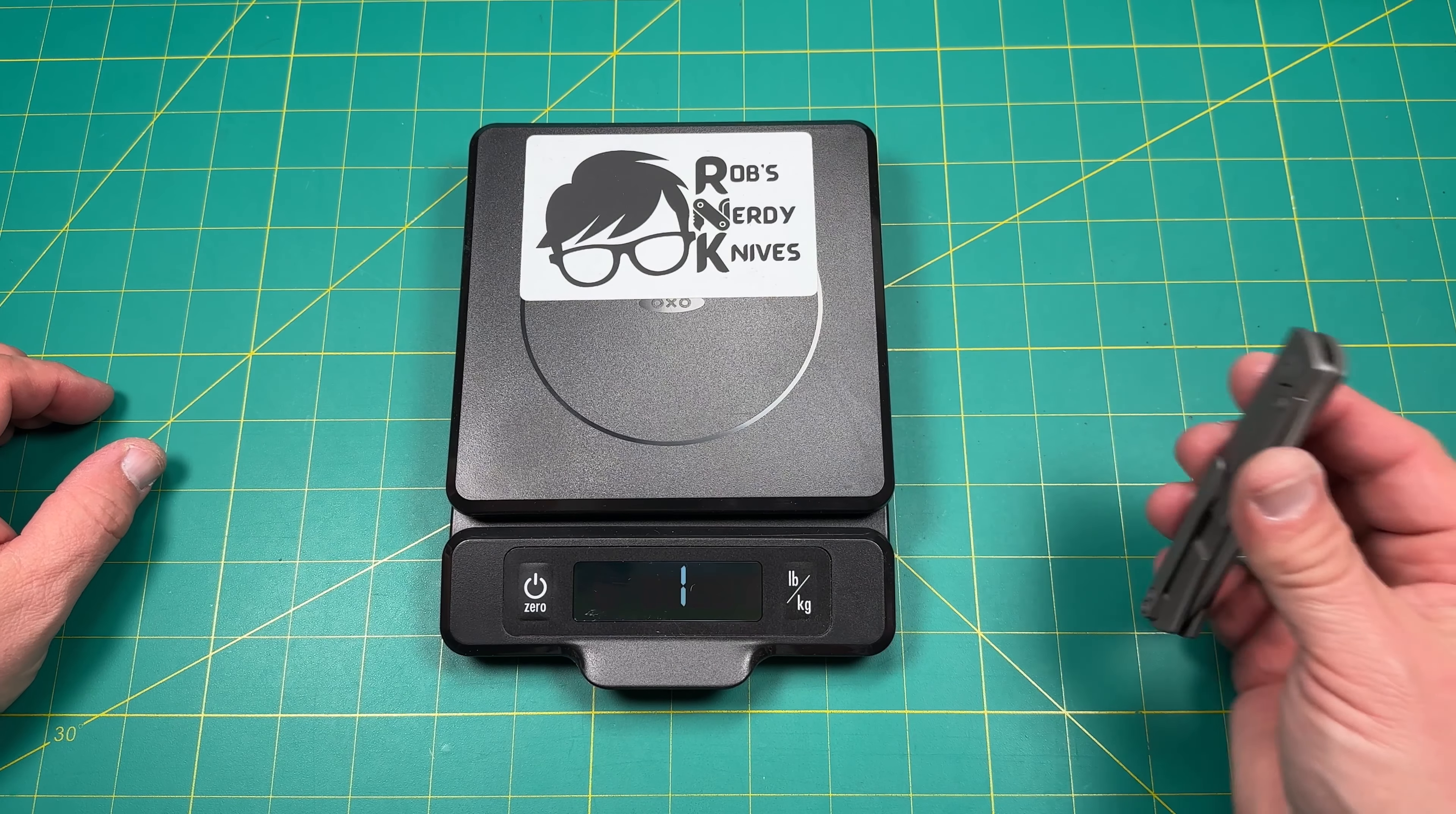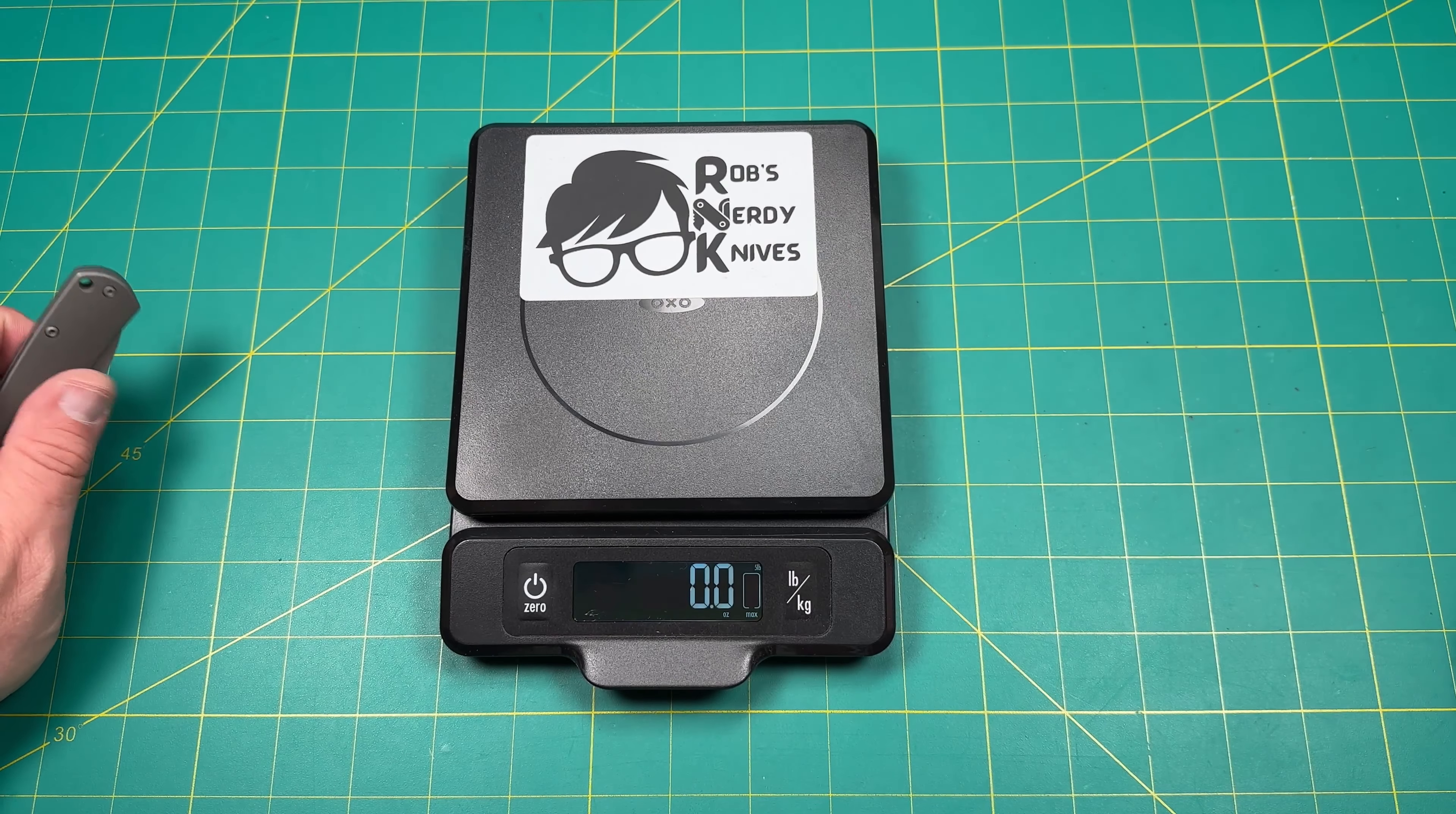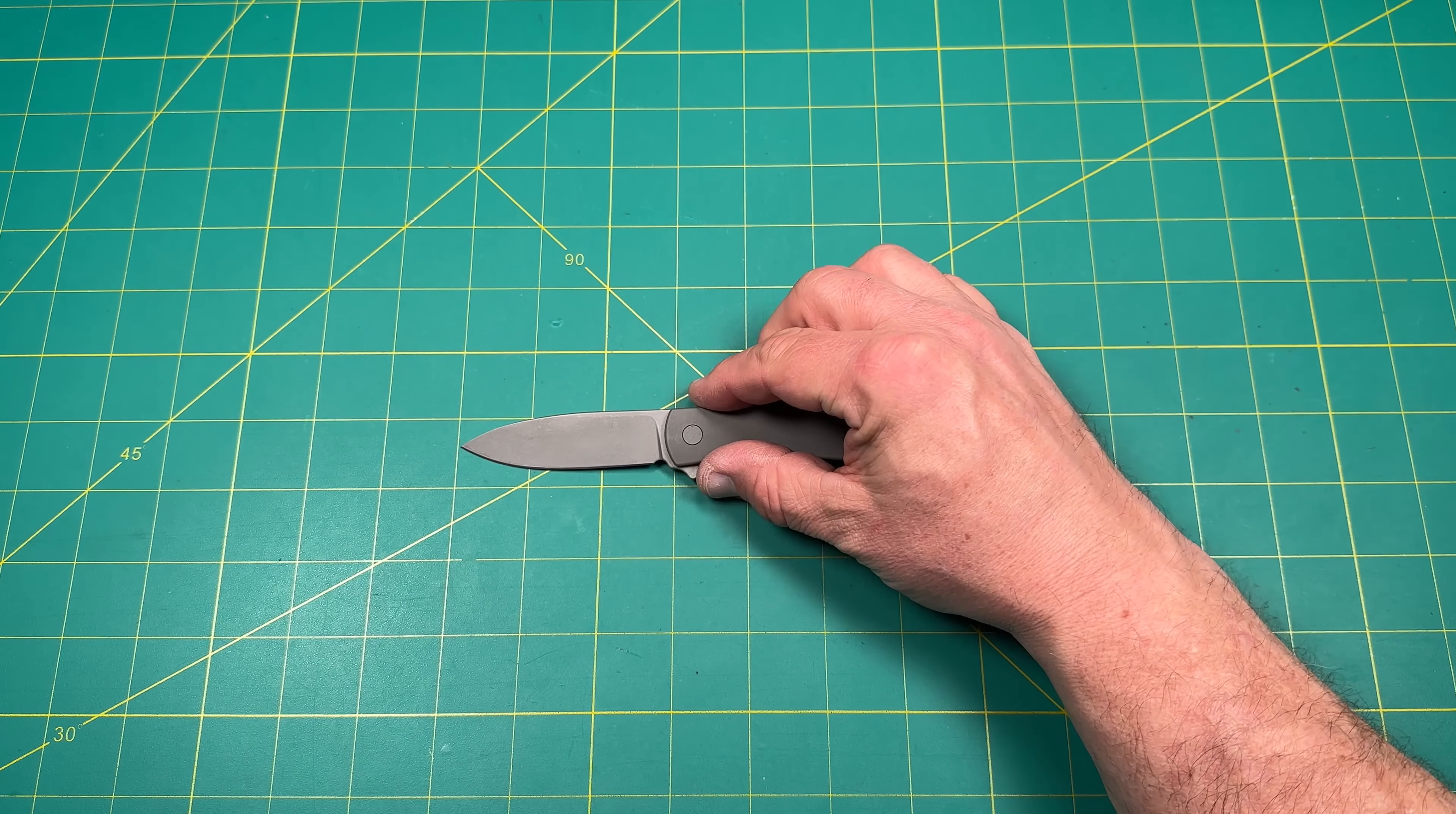Now it's definitely going to be different than the regular Keen. So the mini Keen weighs 2.6 ounces. Let's see how we compare that to the regular Keen, which is 4.4 ounces. So almost 1.8 ounces difference. Definitely a mini, if you will, compared to the regular Keen for sure.